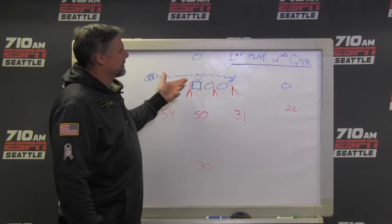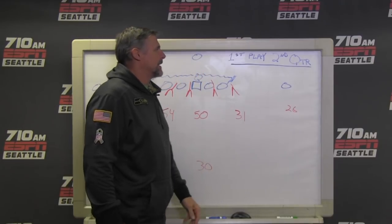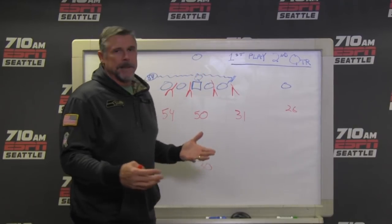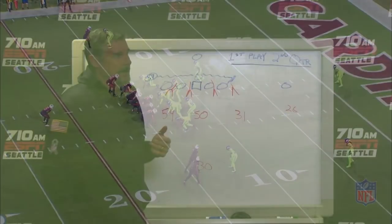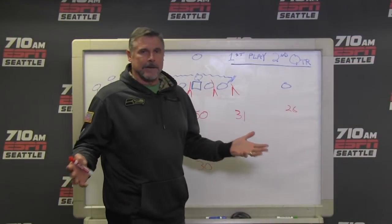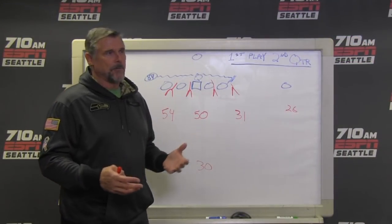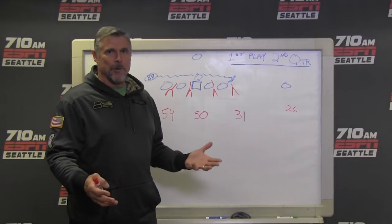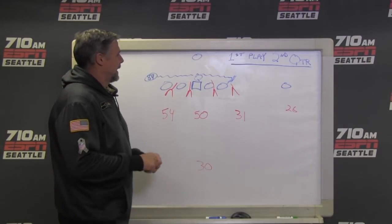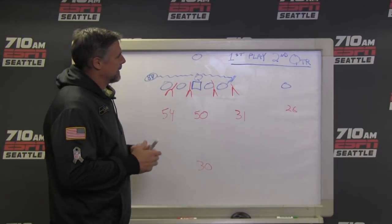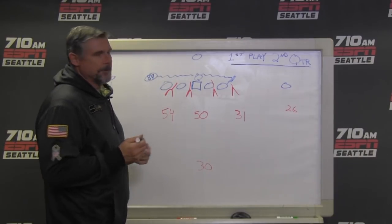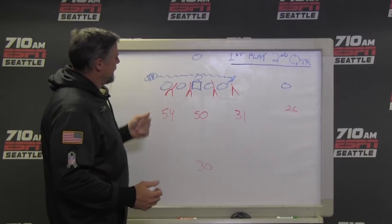We're going to talk about the Seahawks and their Thursday night game against Arizona. They end up getting a win, but the first play of the second quarter, the Arizona Cardinals scored a touchdown on a play to Jermaine Gresham, their tight end. It was a screen play. That's something a lot of people have wondered — why don't the Seahawks run more screen plays on offense? This is how a screen play works. We've talked a little bit about it in the past, but the way they ran this one was a little bit different because they ran it with a tight end.